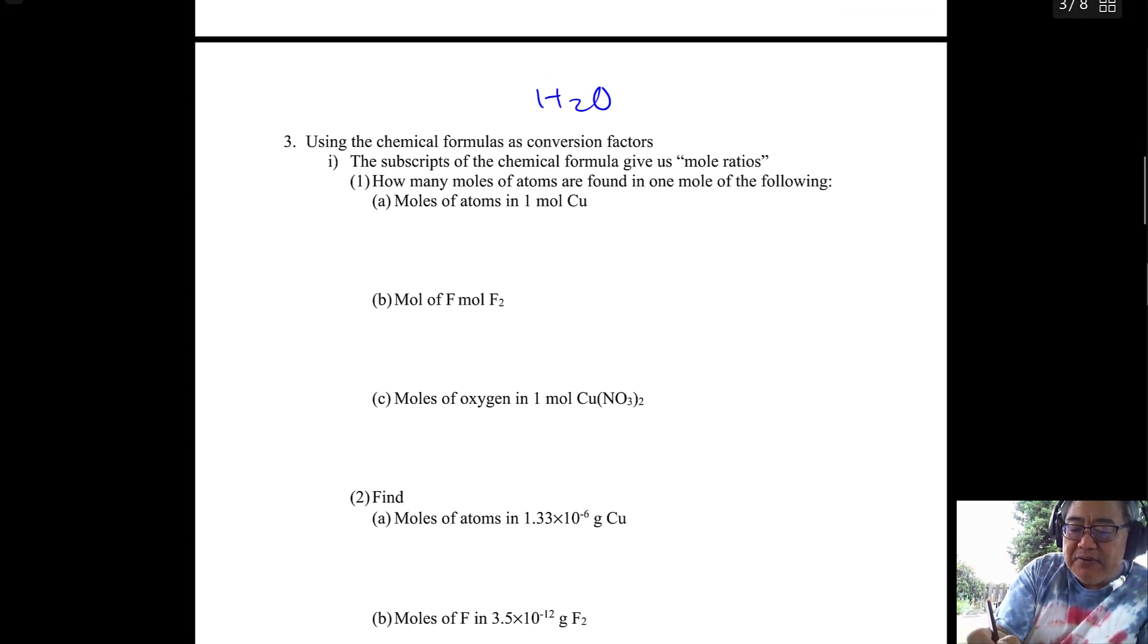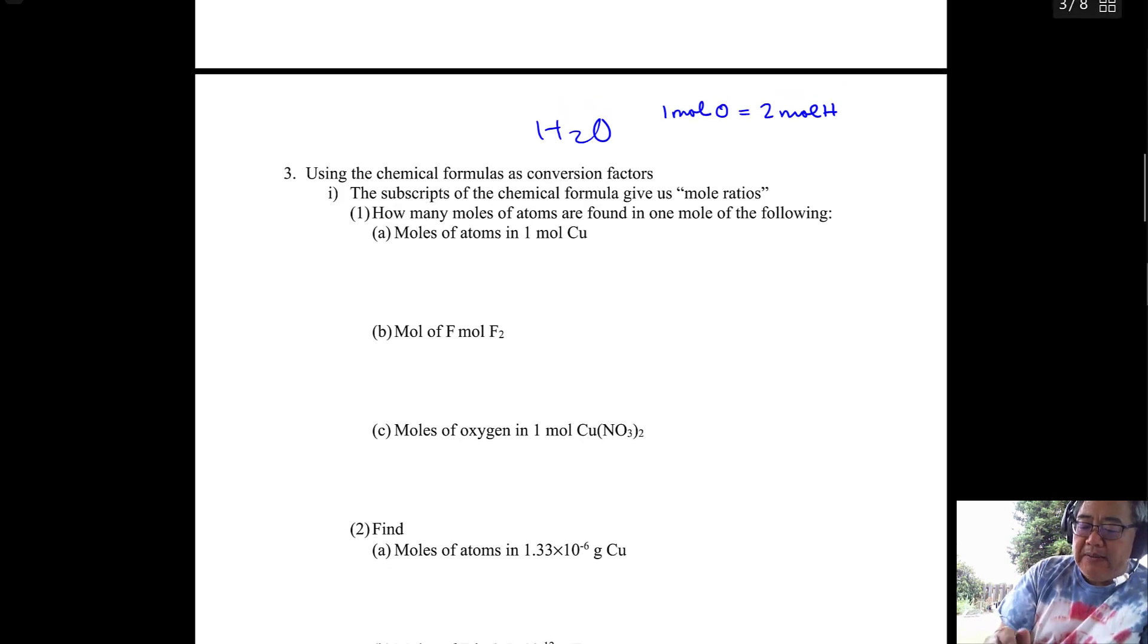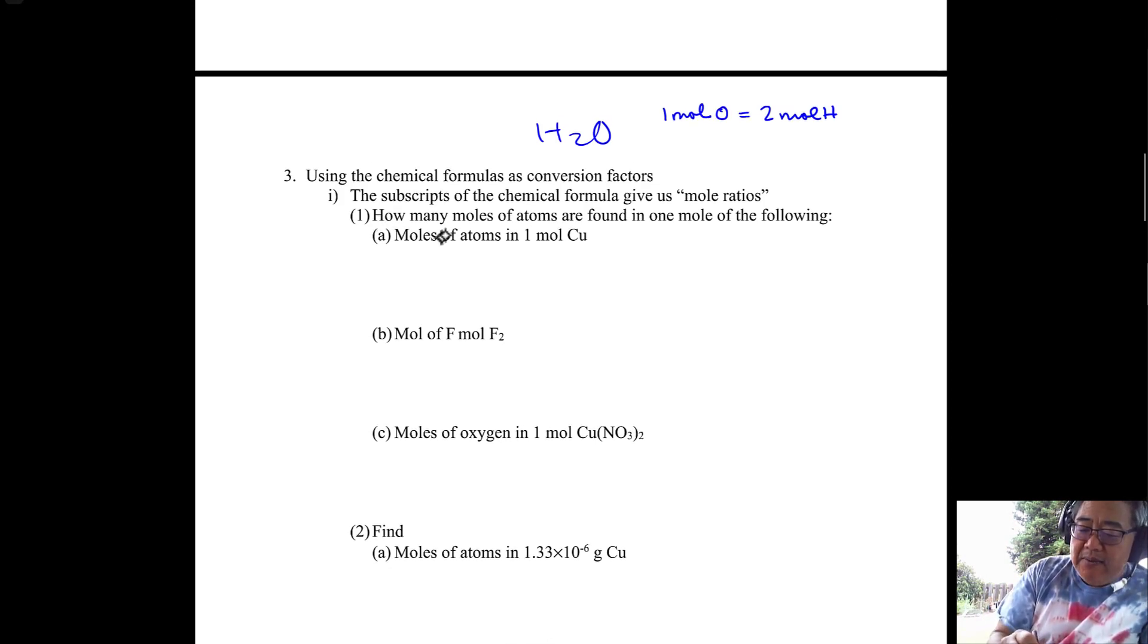It also tells you this, though, and this is because of Avogadro's relationships. One mole of oxygen in water is chemically equivalent to two moles of hydrogen, just the atoms of hydrogen. So you can set up relationships within chemical formulas and use those formulas as conversion factors. In this question down here, it says how many moles of atoms are found in one mole of the following?